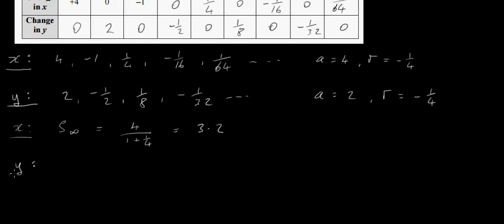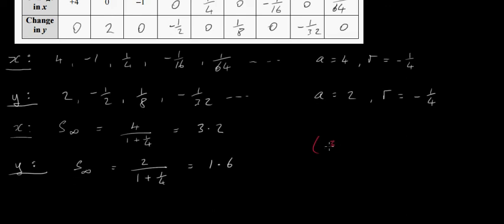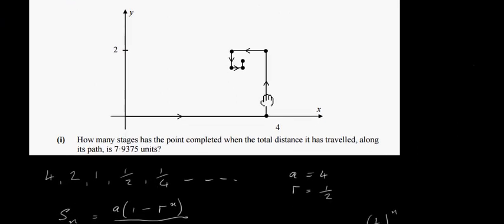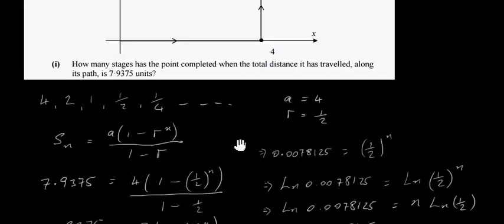For the y values — 2, −1/2, 1/8, −1/32 — again a geometric sequence with a = 2 and r = −1/4. Sum to infinity: S∞ = 2 / (1 + 1/4) = 2 / (5/4) = 1.6. So the final position has x = 3.2 and y = 1.6. Looking at the graph, that appears to be about right.